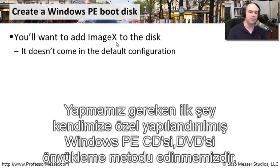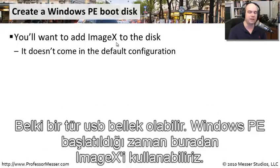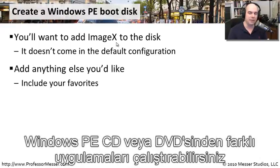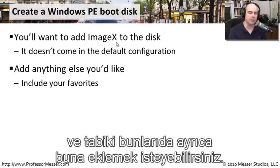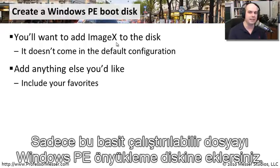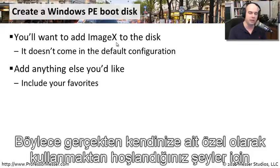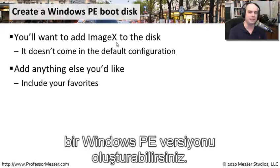ImageX is not on the Windows PE by default. What we need to do first is create our own customized Windows PE CD, DVD, or perhaps a flash drive, so we can get Windows PE started and have ImageX available. You've probably also got some utilities you'd like to use for troubleshooting hard drives or running different applications from the Windows PE disk. The same process we're going through to add this simple executable can be used to load anything else onto this Windows PE boot disk.